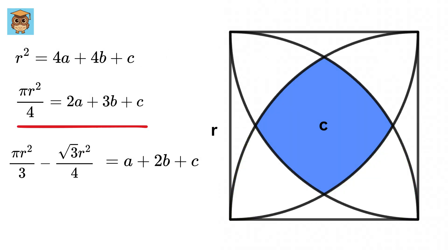Awesome. Now just subtract this equation with this one to get a plus b equals pi r-square by 4 minus pi r-square by 3 or minus pi r-square by 12, and this plus root 3 by 4 r-square.